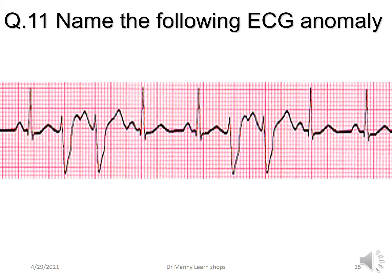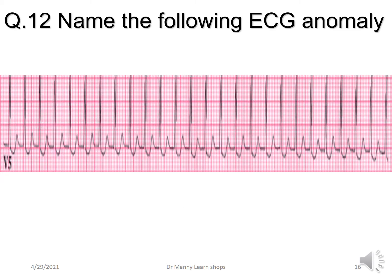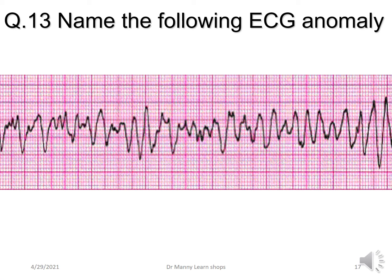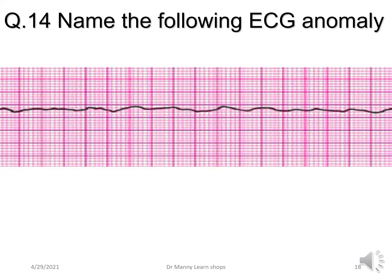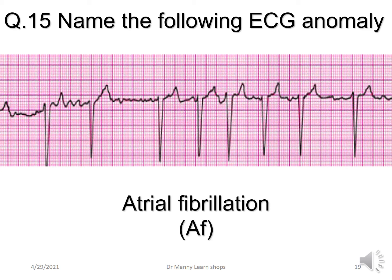Okay, let's see what you remember. What's the following ECG anomaly? Premature ventricular complexes. This one? Supraventricular tachycardia. How about this one? This is coarse ventricular fibrillation. How about this one? I'm sure all of you will get this — this has to be asystole. What about this one? This is atrial fibrillation with a controlled ventricular response.